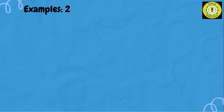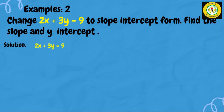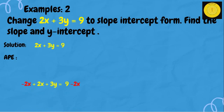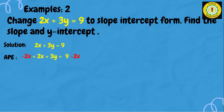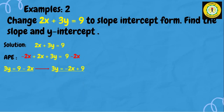Example number 2: change 2x plus 3y equals 9 to slope-intercept form and find the slope and y-intercept. Our given is 2x plus 3y equals 9. We need to isolate y, so we use the addition property of equality and add negative 2x to both sides. We get 3y equals 9 minus 2x, which we rewrite as 3y equals negative 2x plus 9.